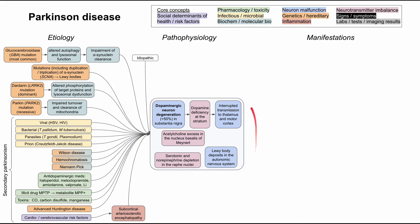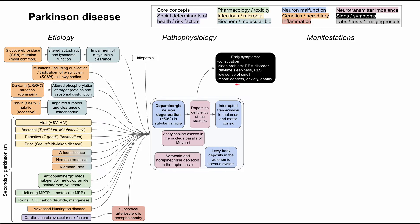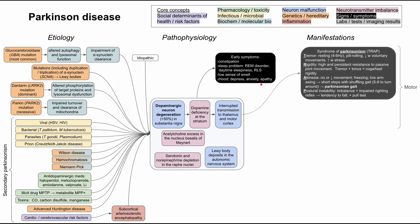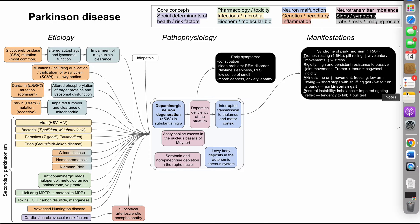All manifestations are very progressive — presenting over years, not months — so a patient may have symptoms for 5, 10, or 15 years before diagnosis. Early symptoms include constipation, sleep problems like REM sleep disorder, daytime sleepiness, or restless leg syndrome. Patients may start to lose their sense of smell (anosmia) and may develop new-onset mood disorders such as depression, anxiety, or apathy — loss of interest in previously enjoyable activities.